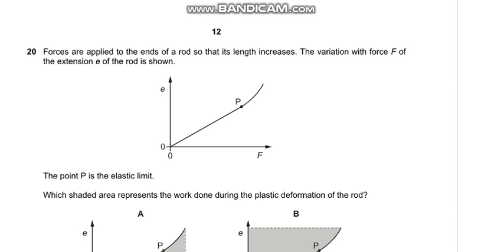Question 20: Forces are applied to the ends of a rod so that its length increases. The variation with force F of the extension E of the rod is shown. The point P is the elastic limit. Which shaded region shows the work done during the plastic deformation? So after the elastic deformation, the region is called the plastic deformation which shows a permanent extension. So if I release it from here it would show a plastic deformation which would be a permanent extension.